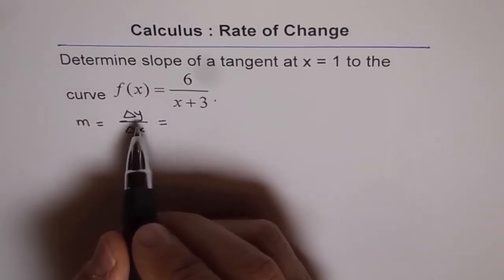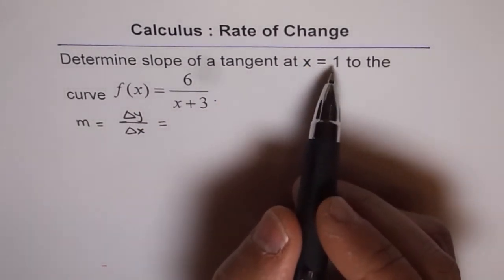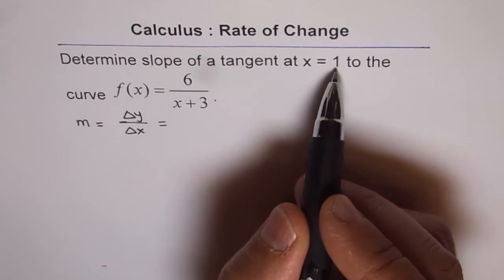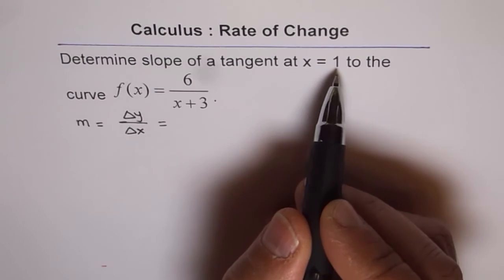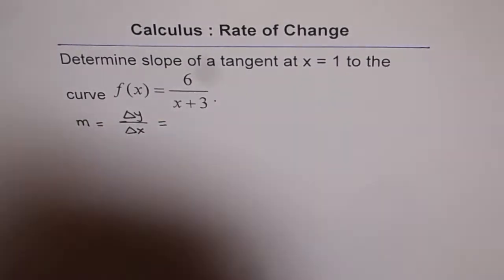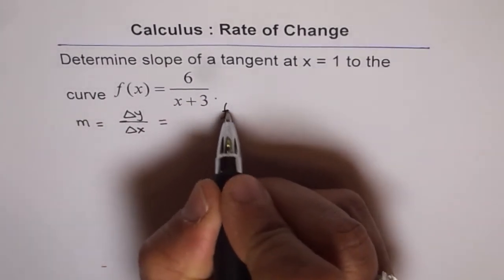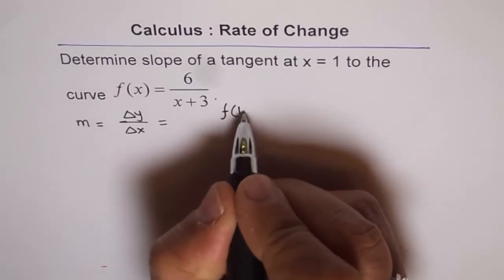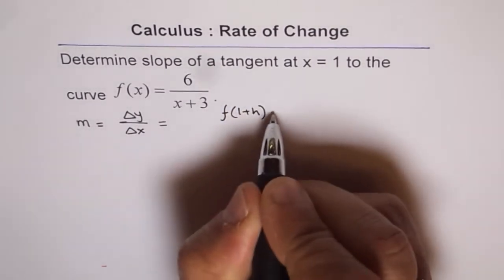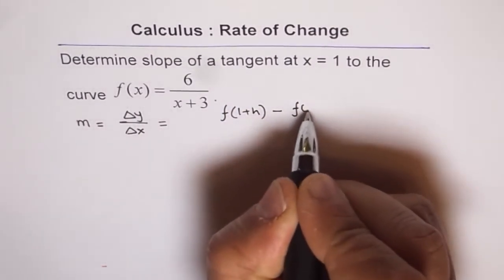So, change in y will be the y values, at 1 and the y value, the function value, at 1+h. And the difference between the two will be f(1+h) - f(1), correct?